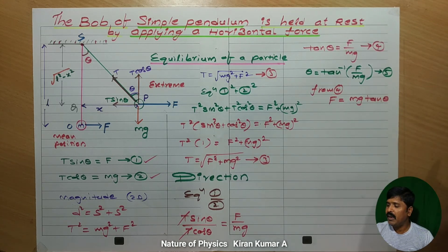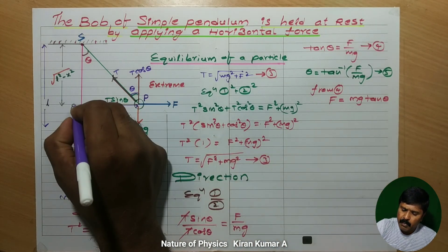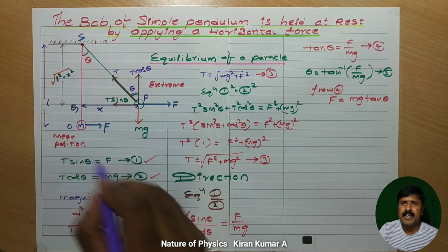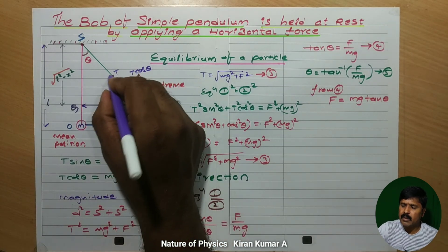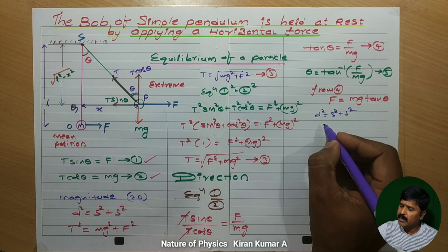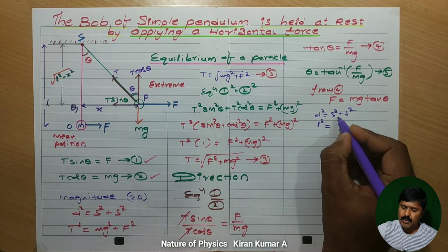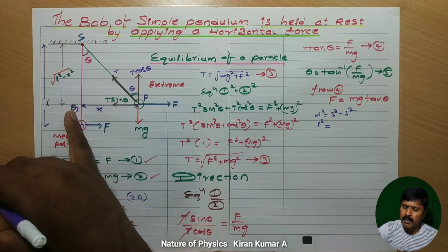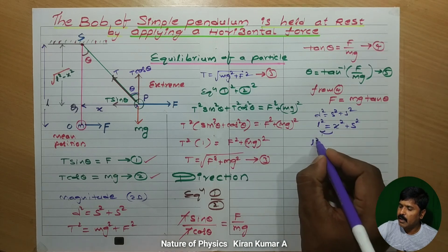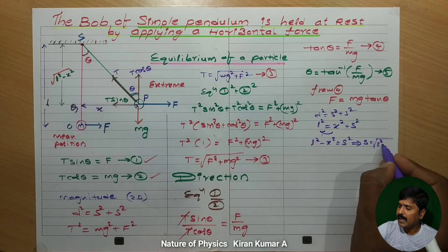Based on the given values we have to select the suitable formula. Here point Q is represented. SQ = √(L² − X²), using the basic formula diagonal² = side² + side². The diagonal represents the length L, which remains the same at mean and extreme positions. PQ represents X, so the other side SQ = √(L² − X²).